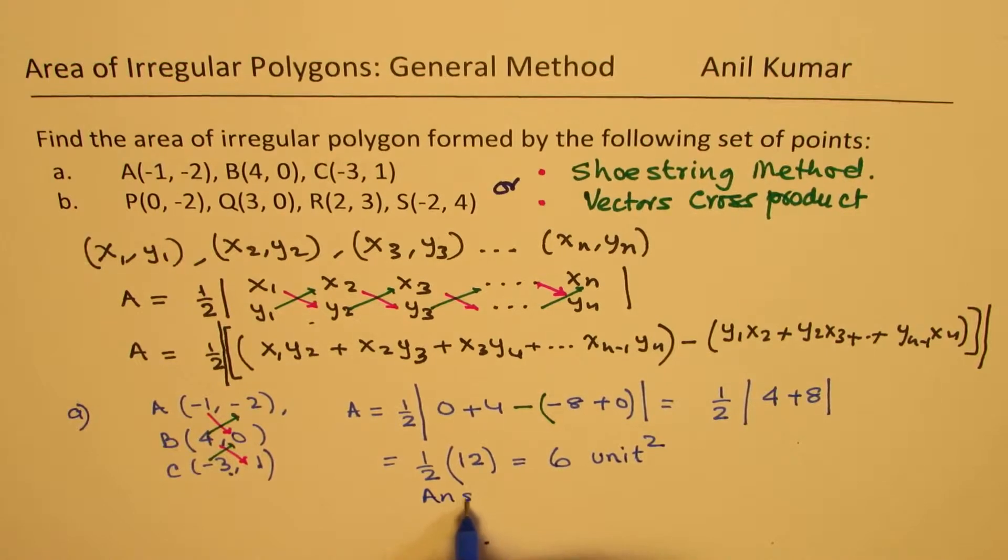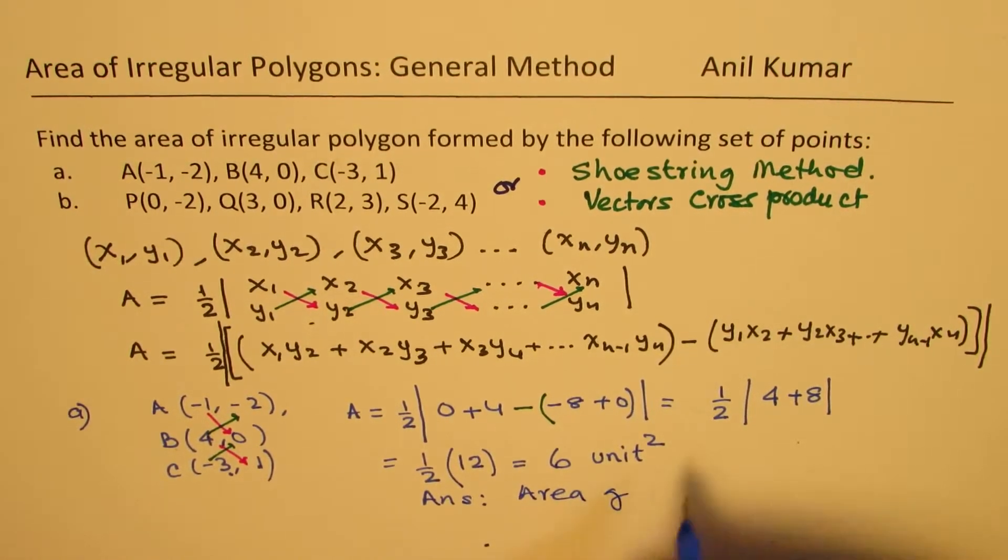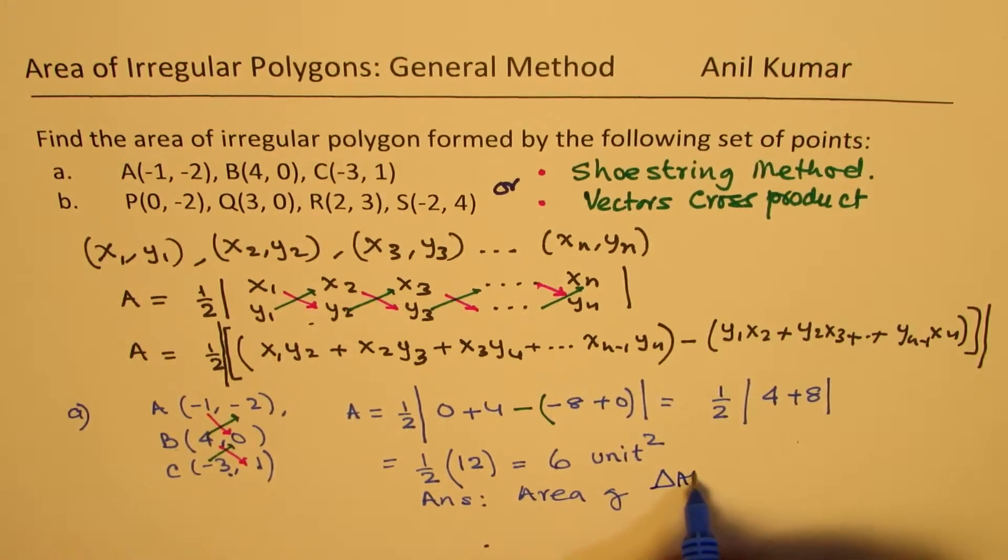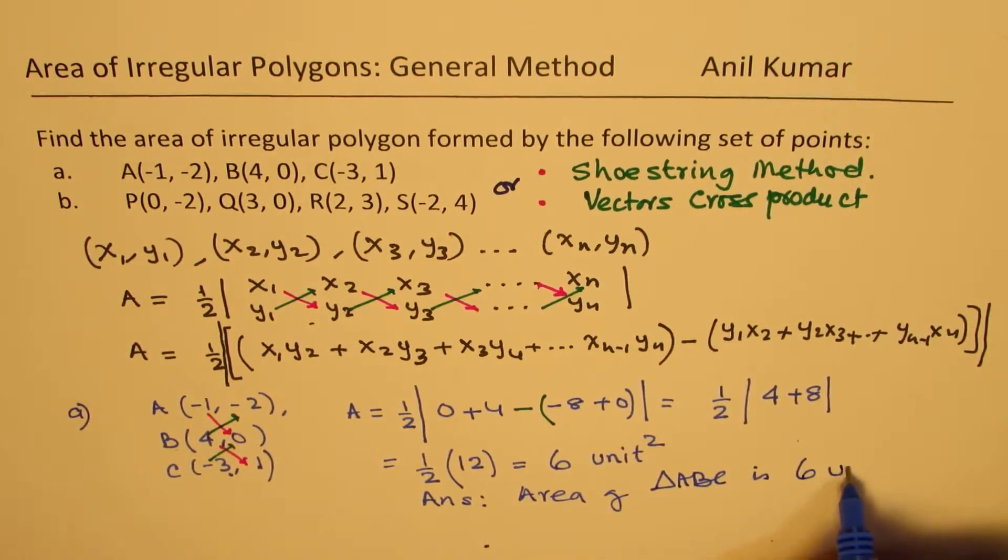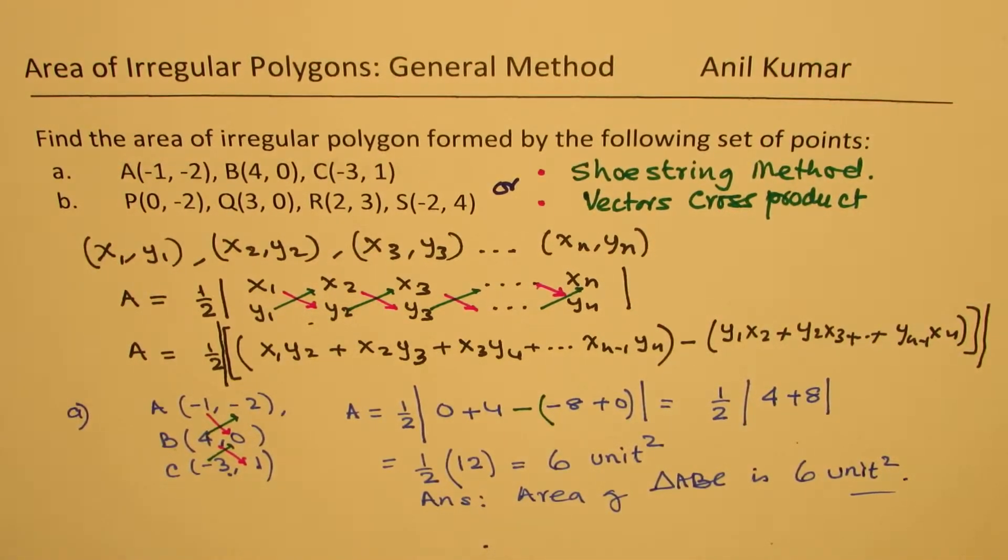Our answer here is that area of triangle ABC is 6 units squared. Is it clear to you? That is how you can find the area once you know the coordinate points.